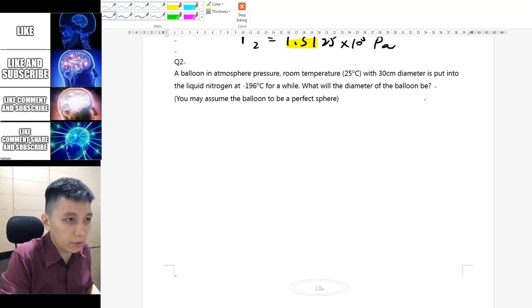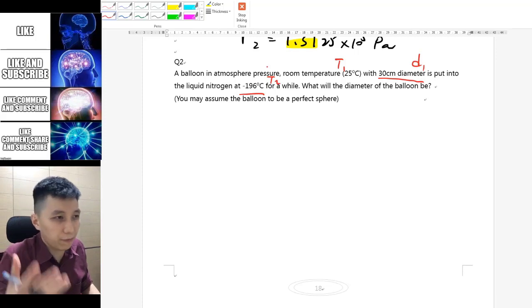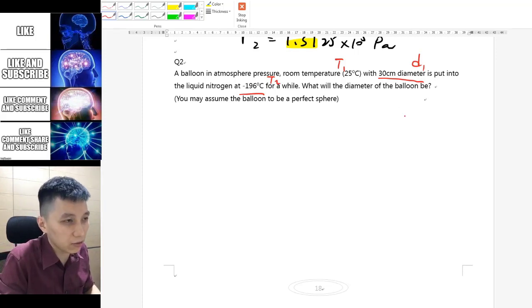Here we've got temperature T1 and here we've got diameter, so let's call it D1 first. Put into liquid nitrogen at another temperature - as you know it's very cold, it's negative something, negative 100 something, you don't want to touch it directly. The question is asking what will the diameter of the balloon be, assuming the balloon would be a perfect sphere.